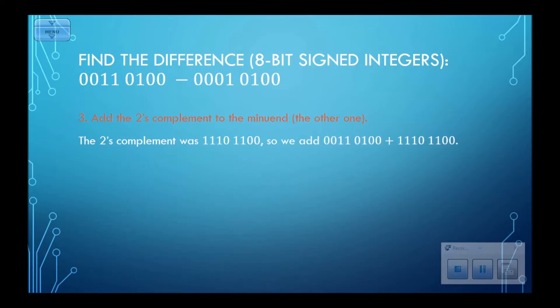Take that and add it to the minuend. So I want to take the sum of 0011 0100 and 1110 1100.